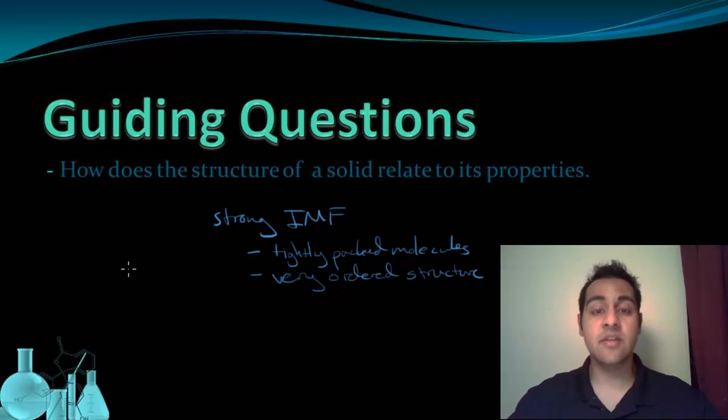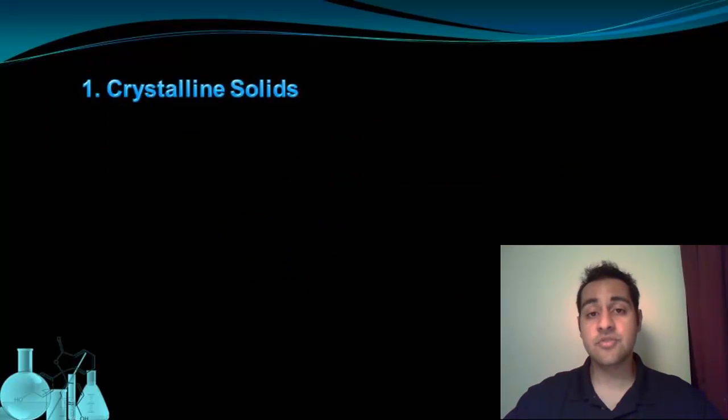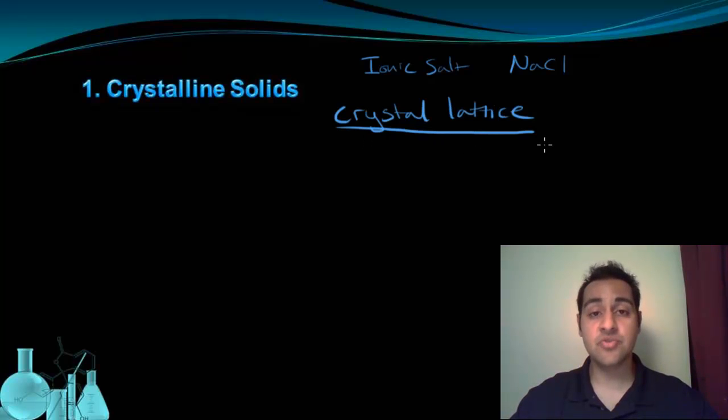In this lesson, we're going to take a look at some of the forms that solids come in and some of the varieties and structures that we see. The first general category of solids are crystalline solids. As the name implies, these solids form crystals. An example of a crystalline solid would be an ionic salt, such as sodium chloride, which is table salt. The atoms in a crystalline solid are arranged in what we call a crystal lattice. And a crystal lattice is essentially a three-dimensional structure made up of repeating patterns.